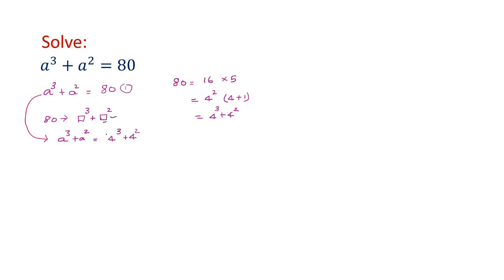Now this 4³, you can take it to left side. You will have a³ - 4³. You can use a³ - b³ formula to factorize. Similarly, this 4², when you take it to this side, you will have a² - 4². That means a² - b² formula. So that is a³ - 4³ + a² - 4² = 0. Remember the formula for a³ - b³.